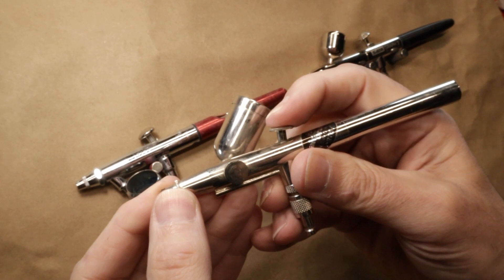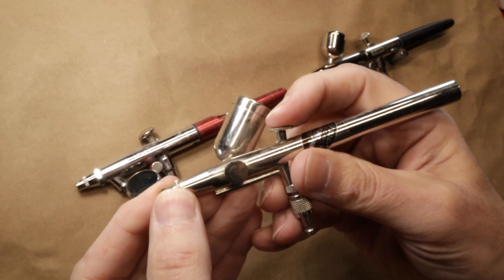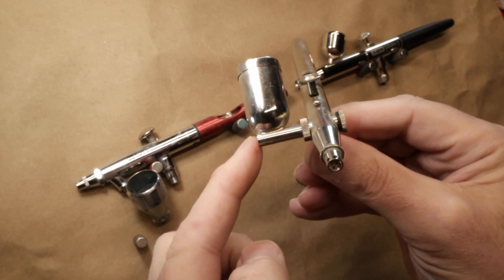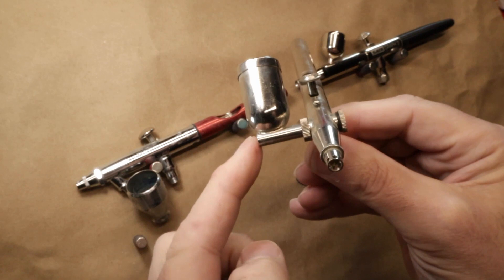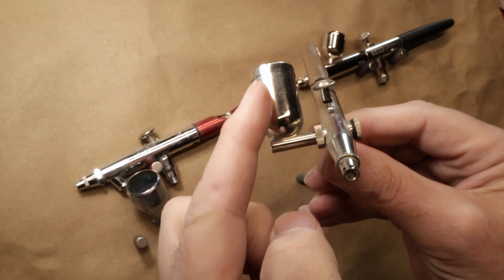Again the trigger works the same way - it's pushed down for air and pull back for paint. So that's all the same, but with the side feed it's kind of a hybrid between the two, the gravity feed and then the siphon feed. So the paint is put in this cup, it goes down through this tube and then enters the airbrush on the side. So this brush will work a little kind of both ways - it's got that help of gravity but it also uses that siphon pull.